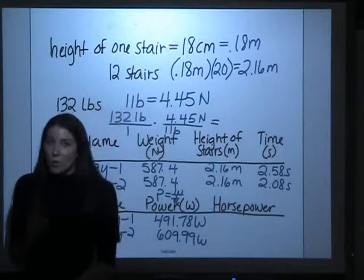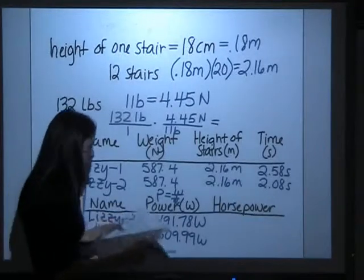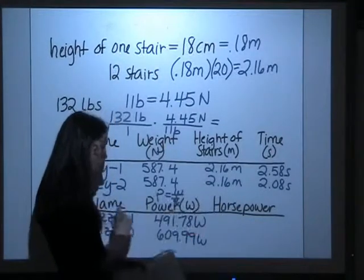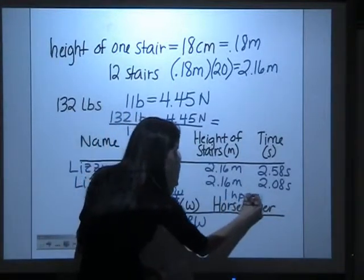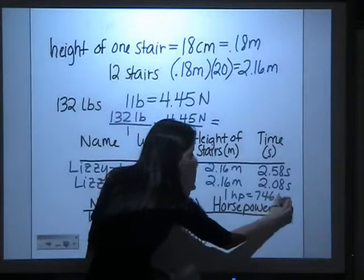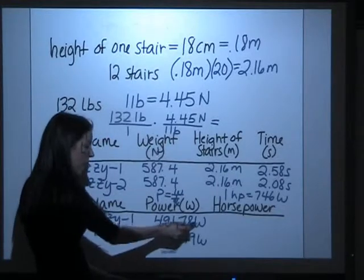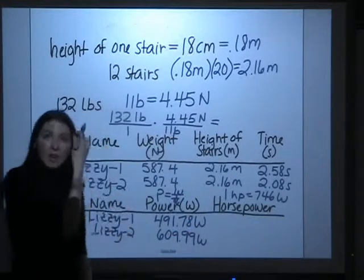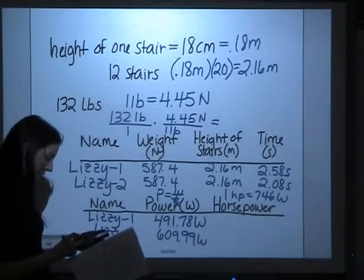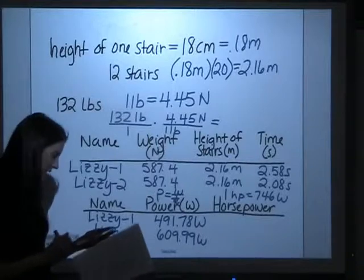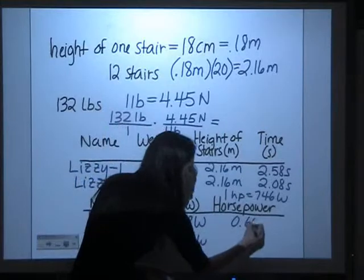The next thing you want to figure out is the horsepower. And to calculate the horsepower, we learned that one horsepower is equal to 746 watts. So to calculate the horsepower, you'll take your power in watts, and you'll divide it by 746 to get your horsepower. So 491.78 divided by 746, gives a horsepower of, we'll do it to two decimal places again, 0.66.